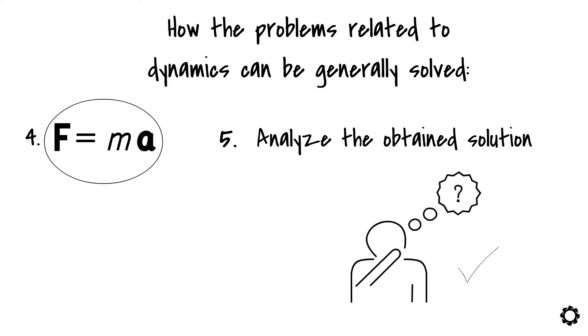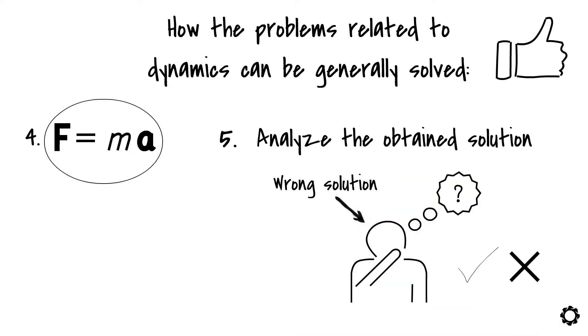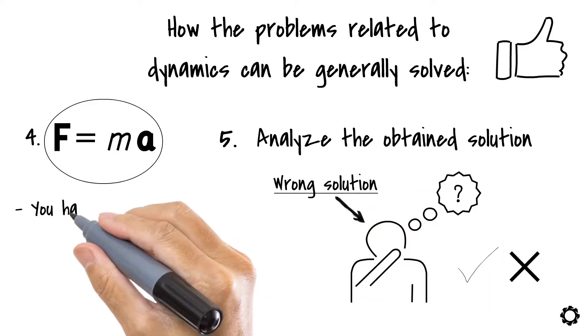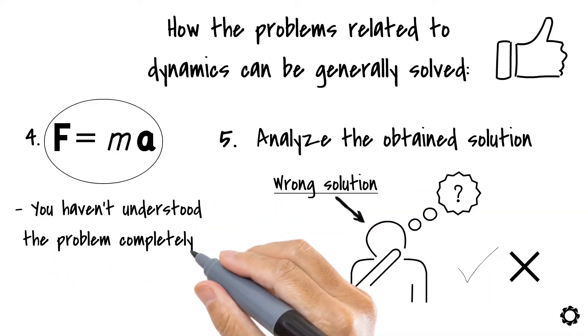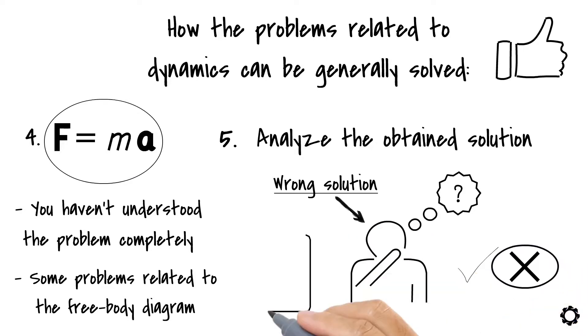If it is, it's a good possibility that you may have solved the problem correctly. If it's not, then think about possible reasons that may have led to the wrong solution. Most often, the reason for wrong solutions may be that you haven't understood the problem completely. There may be some problems related to the free-body diagram of the system studied, or you may have incorrectly typed something in your calculator.